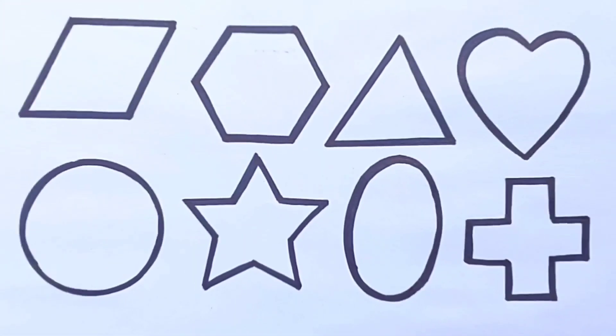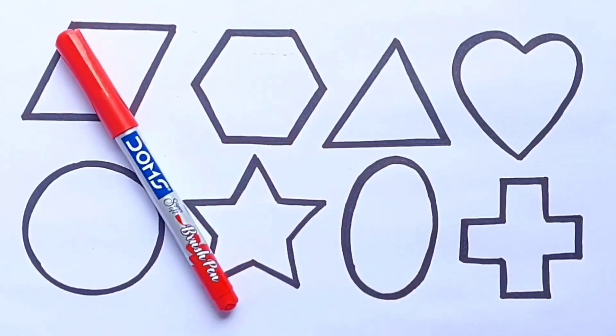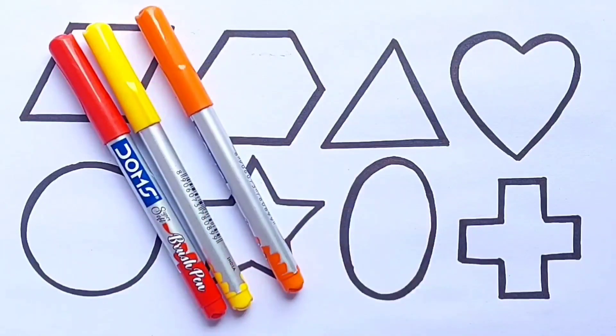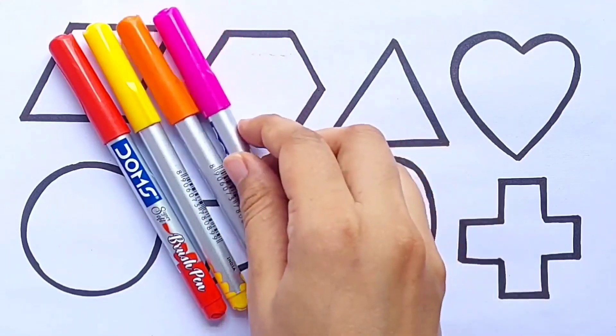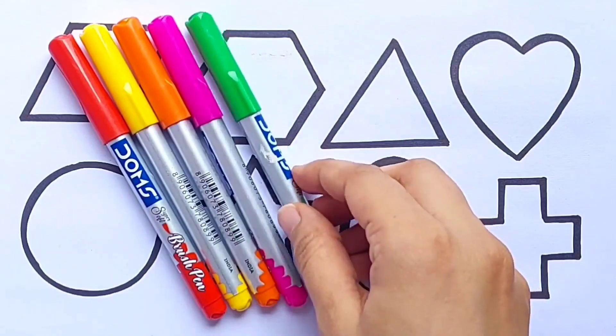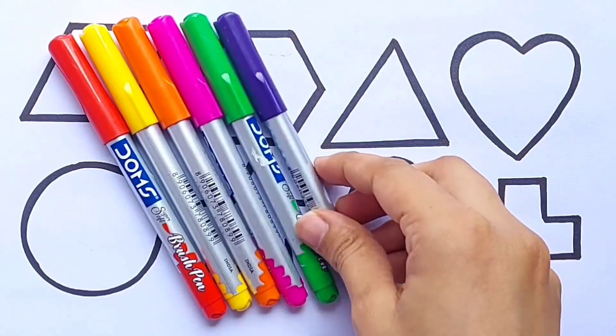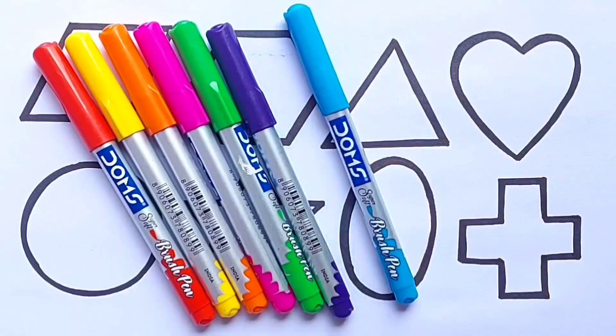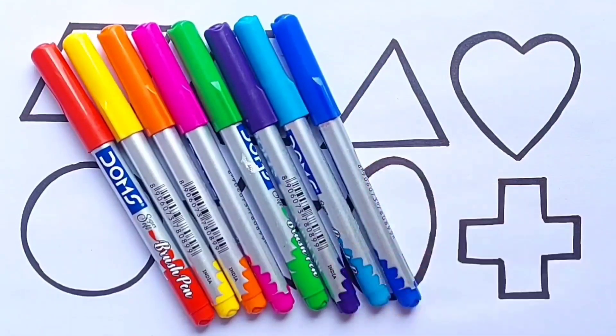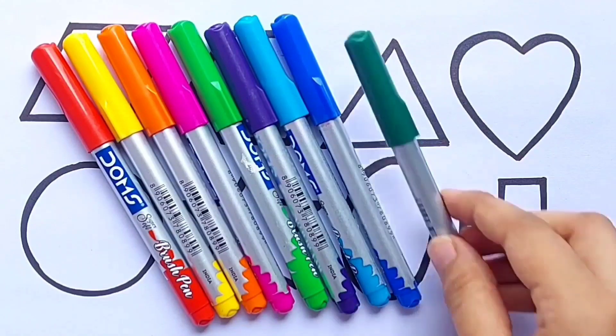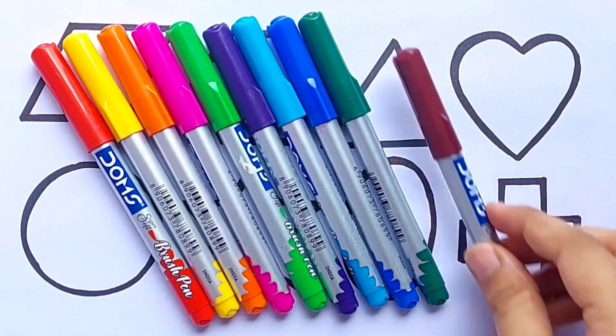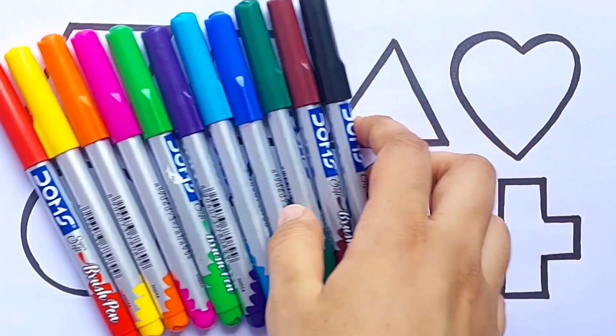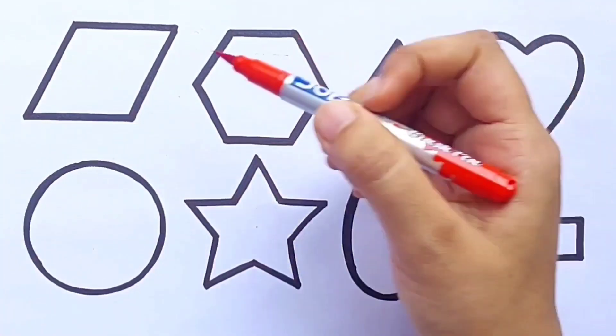Cross. Let's learn colors name. Red color, yellow color, orange color, pink color, light green color, purple color, sky blue color, blue color, green color, brown color, black color, red color.